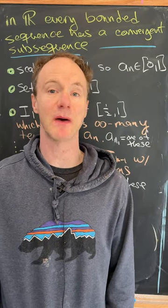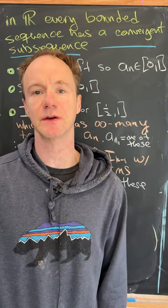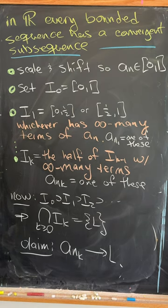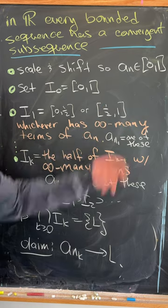Let's look at a sketch of a proof that every bounded sequence has a convergent subsequence in the real numbers. So the idea here is to start by scaling and shifting so that our sequence is on the interval from